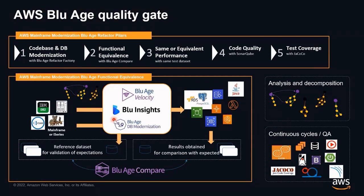The second pillar is functional equivalence — the way we validate the result of the transformation. The transformation is a like-for-like transformation; we are not going to alter the way data are accessed or processed. The functional algorithm will be kept intact, and the technical layer will be completely re-architected in a model-to-model, pattern-to-pattern transformation, re-architecting the application into a three-tier application composed of a presentation layer, a backend layer, and a persistency layer.